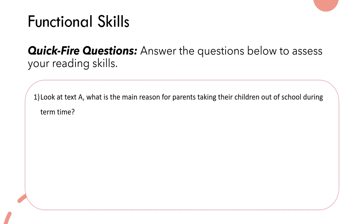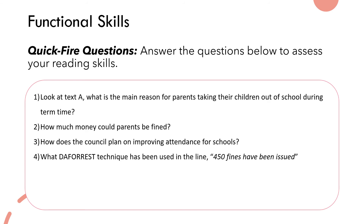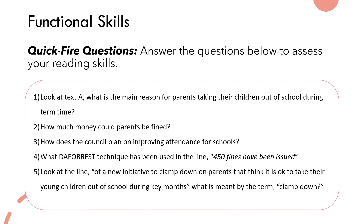Answer the questions below to assess your reading skills. Number one: look at text A — what is the main reason for parents taking their children out of school during term time? Number two: how much money could parents be fined? Number three: how does the council plan on improving attendance for schools? Number four: what DAFOREST technique has been used in the line '450 fines have been issued'? If you're not sure about DAFOREST techniques, please check out our other videos. Number five: look at the line 'a new initiative to clamp down on parents that think it is okay to take their young children out of school during key months' — what is meant by the term 'clamp down'?